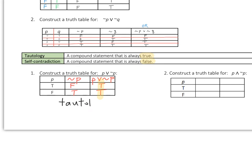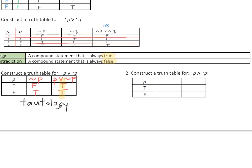Let's construct a truth table for P and not P. We need a not P column and then the whole statement P and not P. If P is true, not P is false; if P is false, not P is true. Now remember, with the AND, they both need to be true in order for the whole thing to be true. True and false — that's false. False and true — also false. So the whole last column is false; therefore, we have ourselves a self-contradiction.